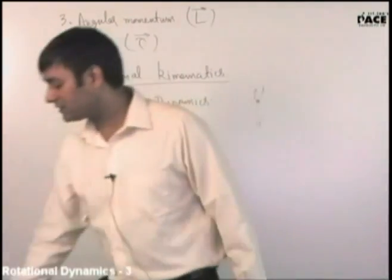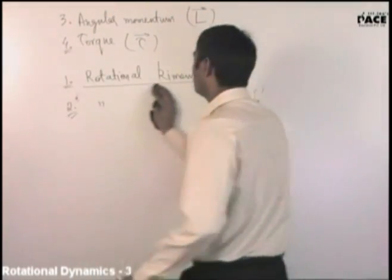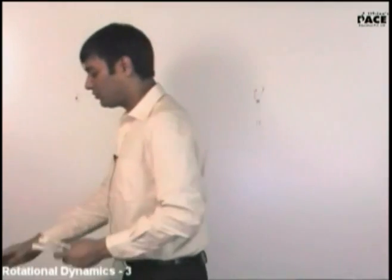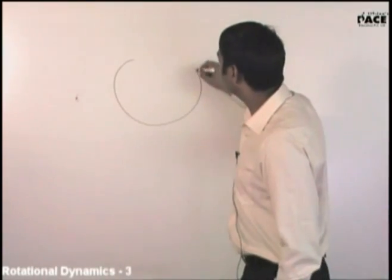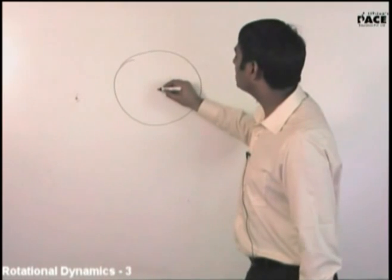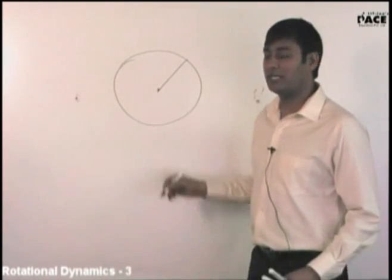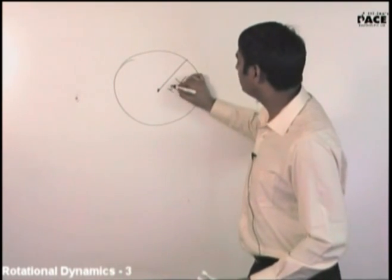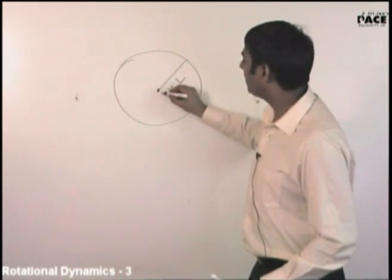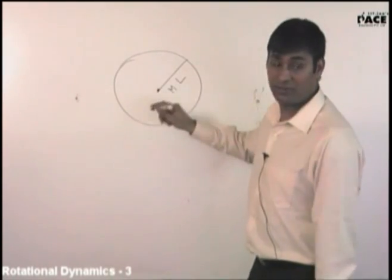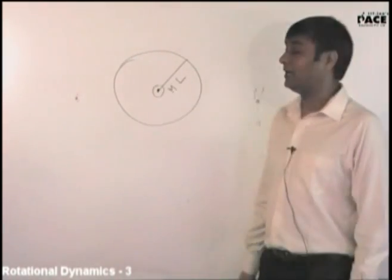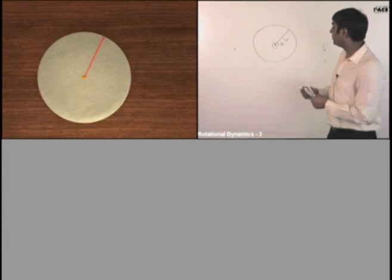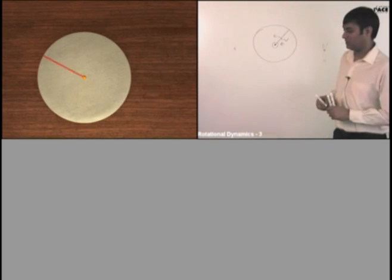Just see — rotational kinematics. I will not spend too much time because you have already done translational kinematics. You just need to get a glimpse of this. Let's say this is a rod of length L and mass m, rotating about a hinge. This axis and this rod is rotating in a circle.